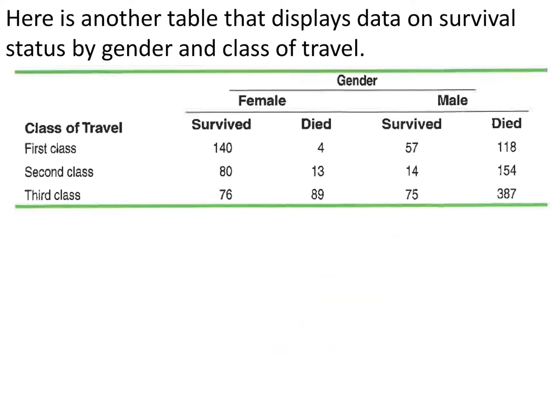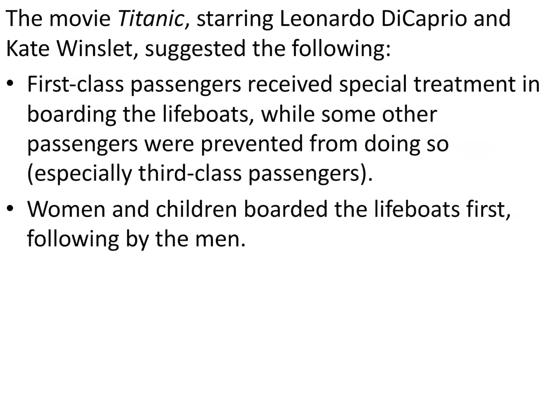But if we break this down and look at it a different way — looking at class and gender — of the first class females, almost all of them survived and very few died. But if we look at the males who were first class passengers, they definitely had more die than survive. So is it class or is it gender that has more effect?